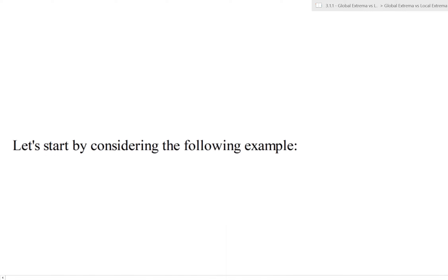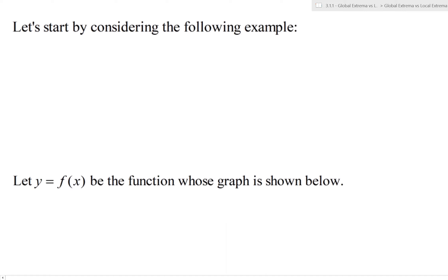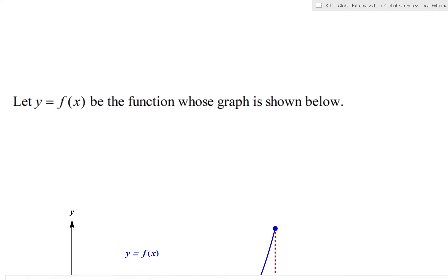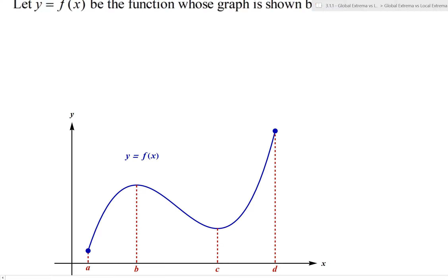So we're going to start by just considering an example here. Let's consider a function f of x whose graph is shown right here in this diagram. So here's this function. What we'd like to discuss before we formally define these things is extrema, which just means the biggest or smallest value of a function. We classify them into two different categories: global or absolute extrema, and local extrema. We can see a function that is defined over a closed interval a to d.